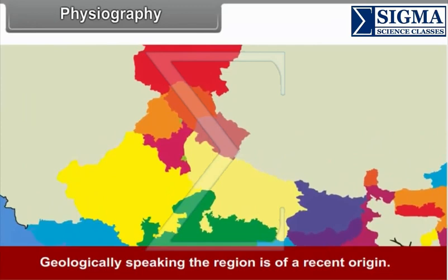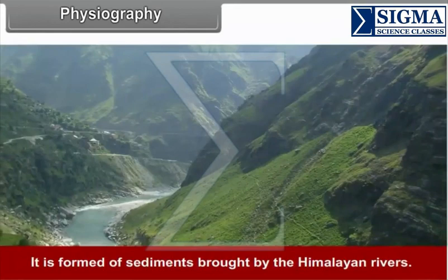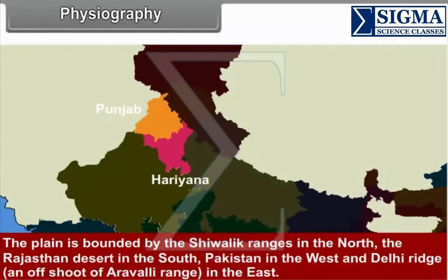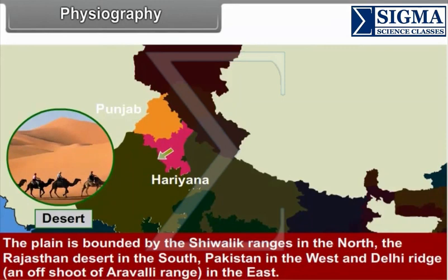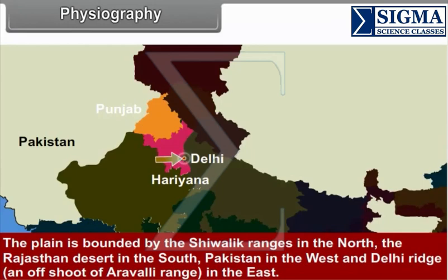4.1 Physiography. Geologically speaking, the region is of recent origin. It is formed of sediments brought by the Himalayan rivers. The plain is bounded by the Shivalik range in the north, the Rajasthan desert in the south, Pakistan in the west, and the Delhi Ridge in the east. The region slopes to the south and south-west.